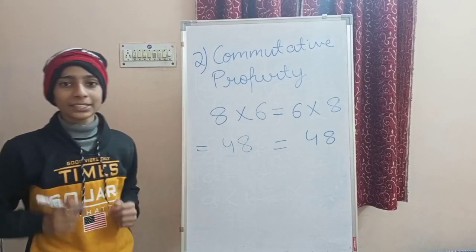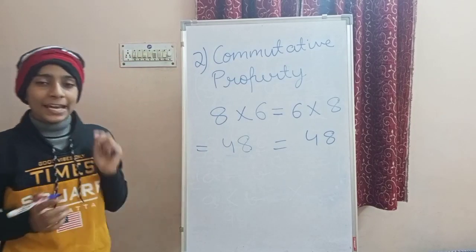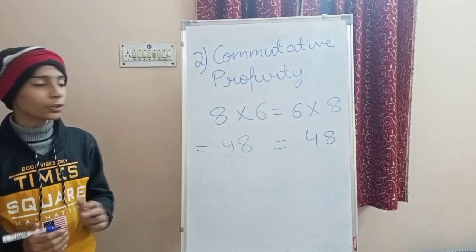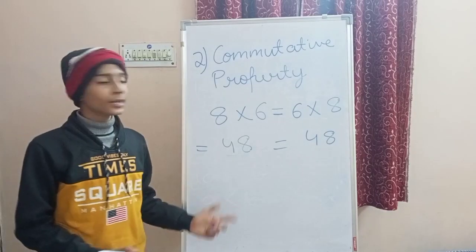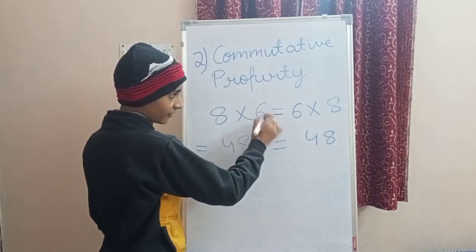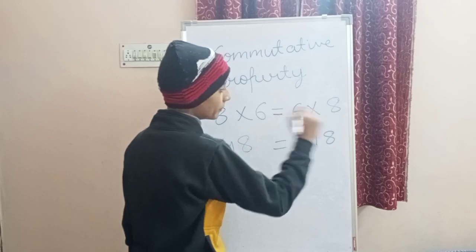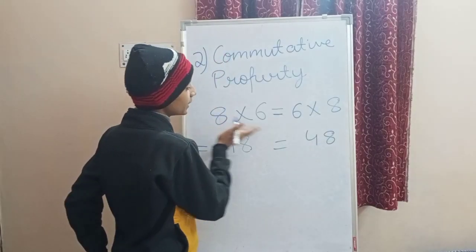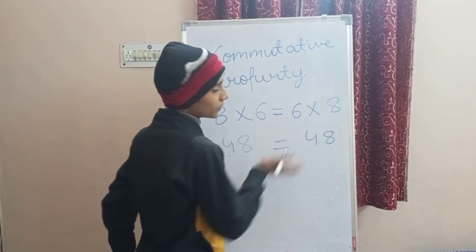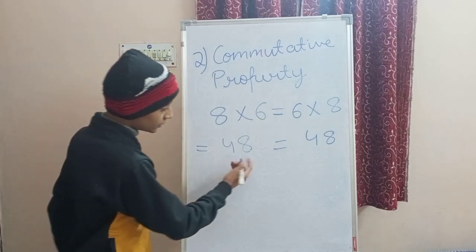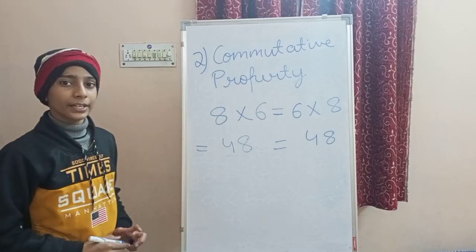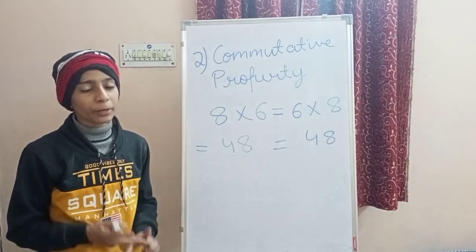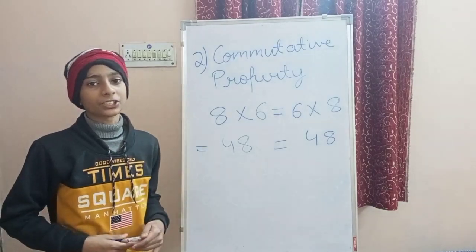Commutative property simply means A into B is always equal to B into A. So 8 into 6 equals 6 into 8, and the product is 48. This means both closure property and commutative property hold on multiplication.